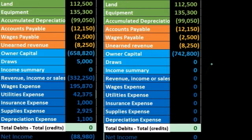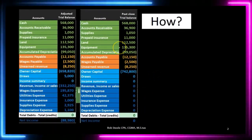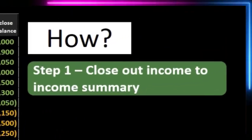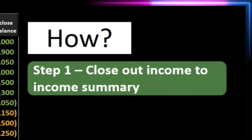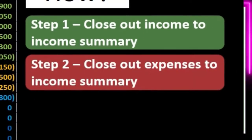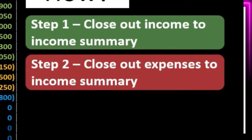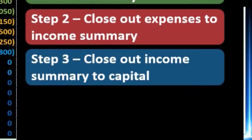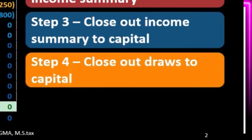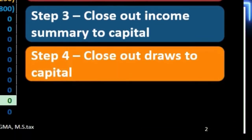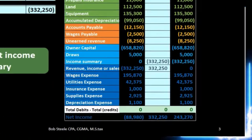The way we do that is with four steps. Step one, done in a prior video, was to close out income to the income summary. Step two was to close out expenses to the income summary. Step three, what we're doing now, is to close out the income summary — which now has net income in it — to the capital account. Then finally, step four will close out the draws to the capital account.